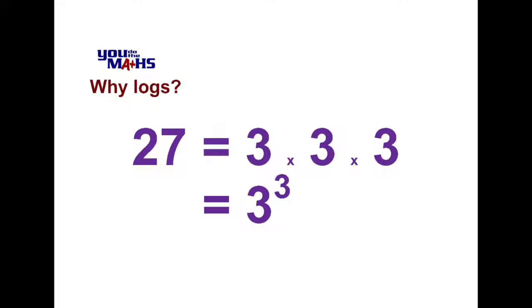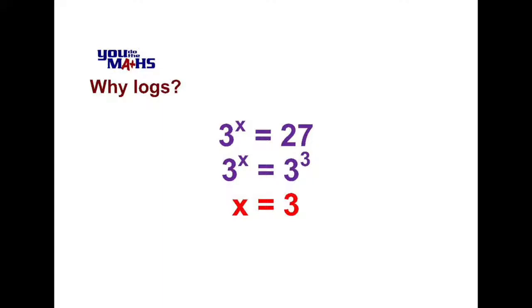In that case, what we can do is solve the equation by saying that because the base is 3 in both the left and right hand side of the equation, the unknown value x will equal 3.